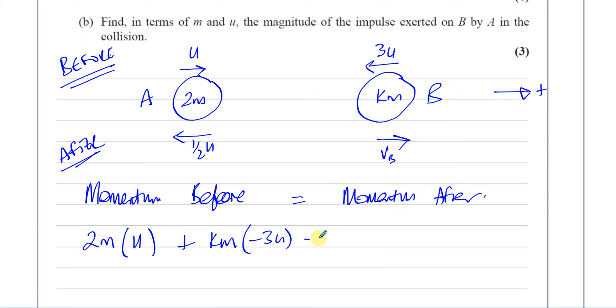And that's equal to the momentum after, the total momentum after. We've got 2M times, now this direction has been reversed. So it's definitely going in the direction that we've called negative. So it's minus a half U.